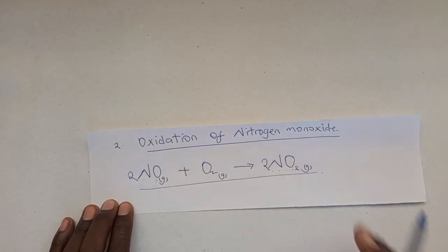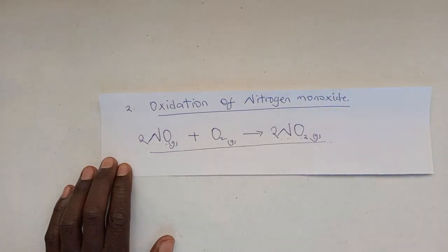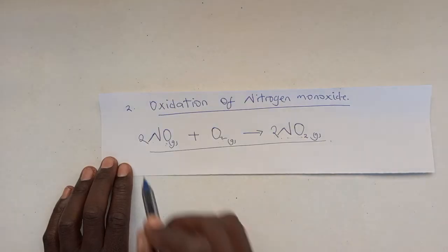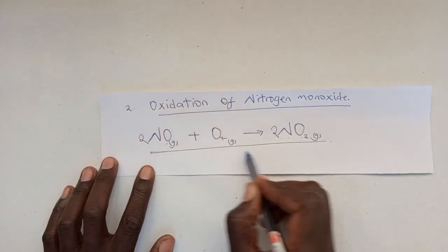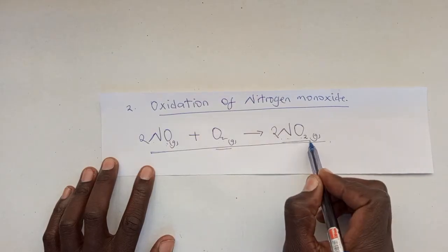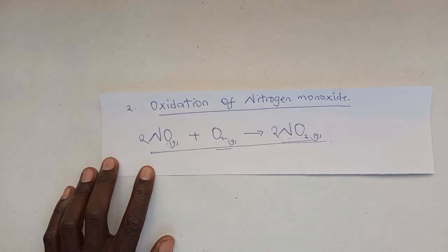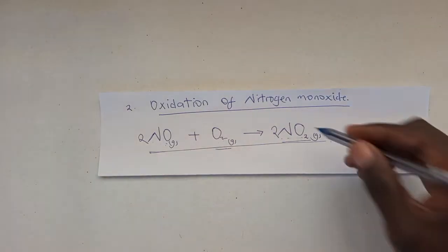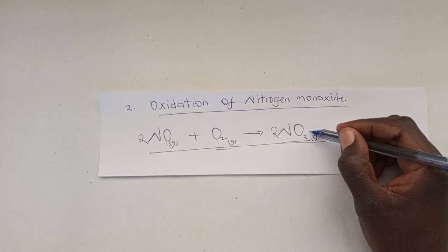In the first step, we had the oxidation of ammonia where we reacted ammonia with oxygen to give us nitrogen monoxide and water. The nitrogen monoxide that was produced is used to react with oxygen to give us nitrogen dioxide.